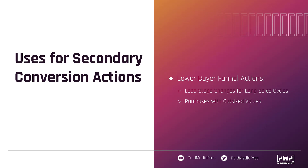The same can be true for purchases with outsized values. One hesitation I get about including longer lead stages in conversions is: if my buyer cycle is short enough that the different lead stages and purchases can be included in conversions because the data is real-time enough to influence the bidding algorithm, why wouldn't we do that? While that strategy can work well for some accounts, if you have lower volume and one high-value purchase can skew the data — say 15 leads worth $100 each but one purchase worth $50,000 — using that for bidding decisions can really skew things toward that $50,000 conversion action and away from your $100 lead goal.